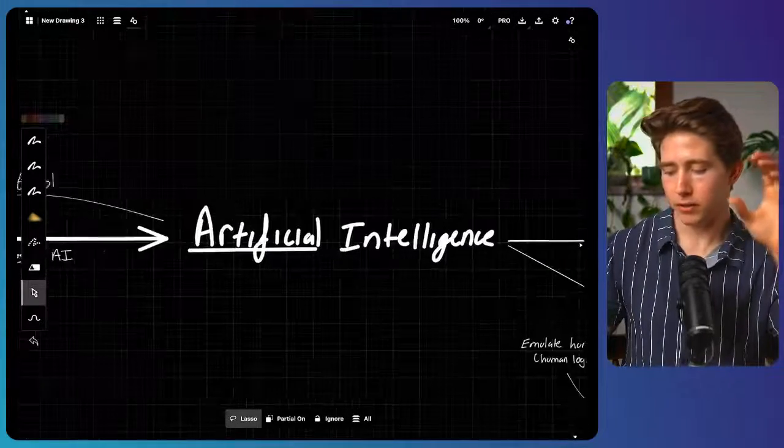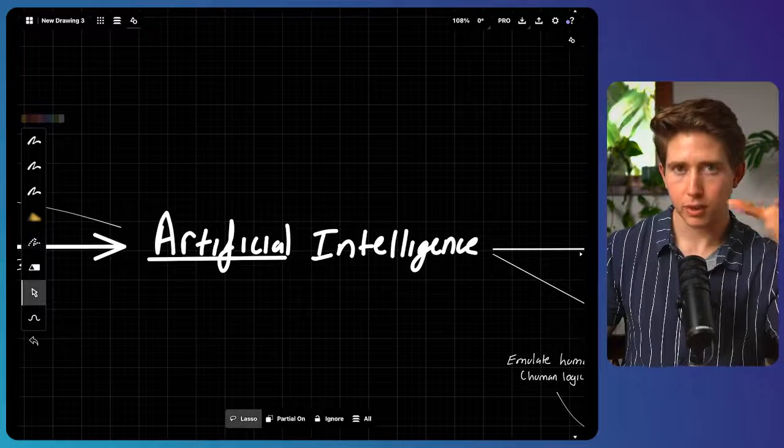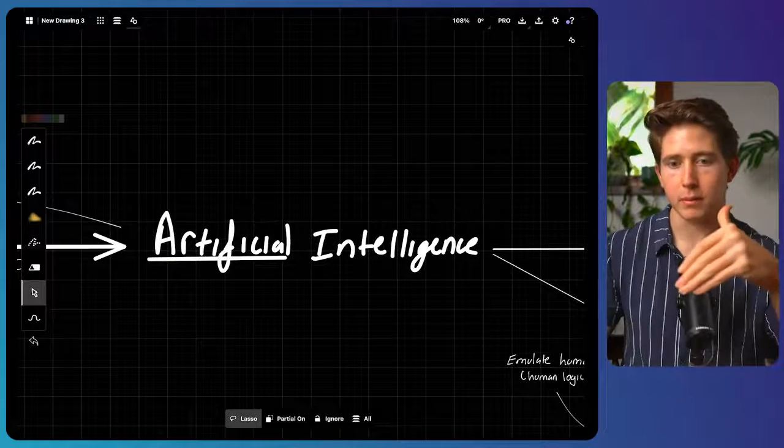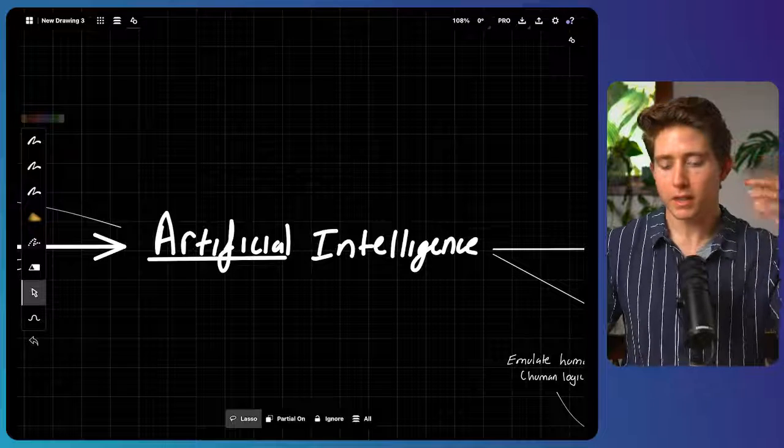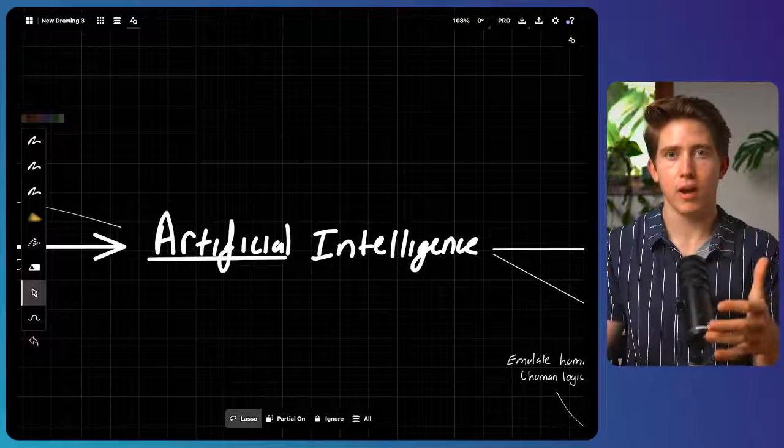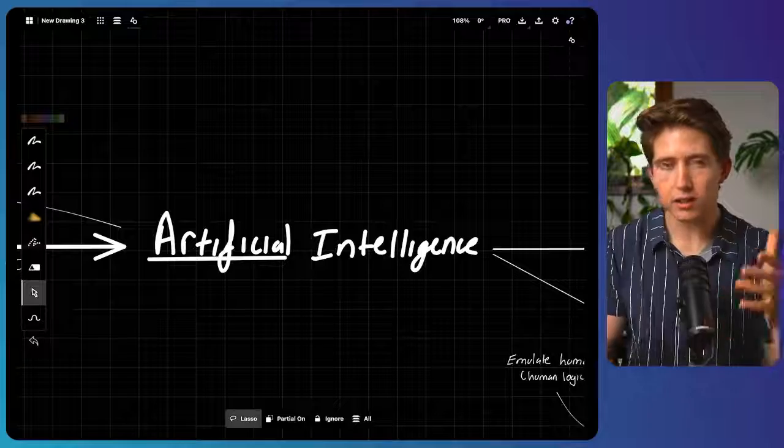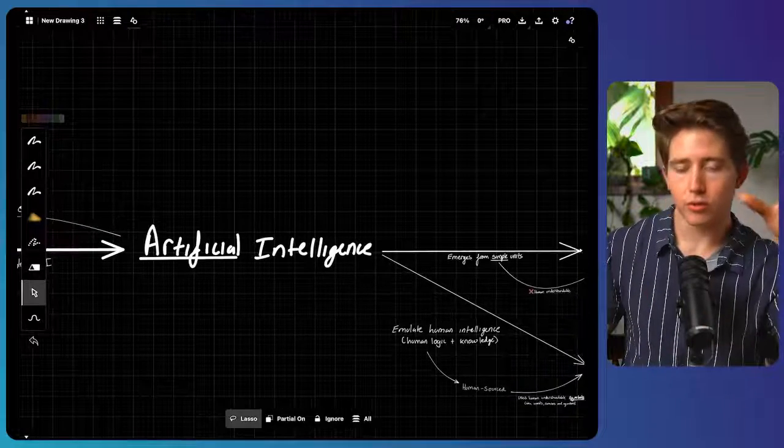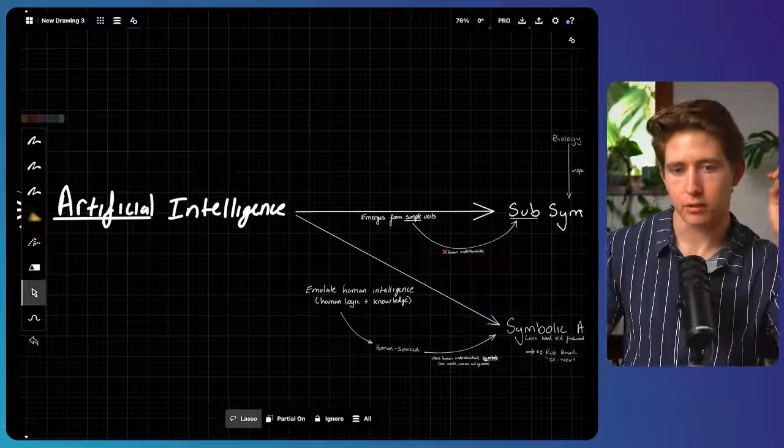But this idea of artificial intelligence is actually pretty simple. It's kind of all encapsulated in the name. It is our attempt at making an intelligent system artificially, an intelligent machine. And there's two overarching ways we can make an intelligent machine.